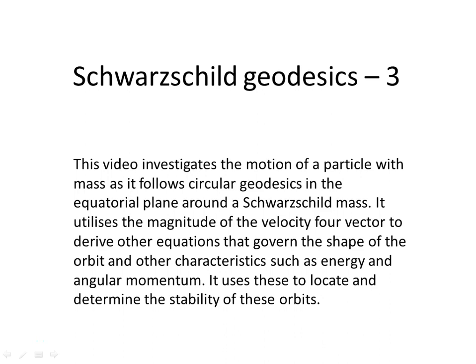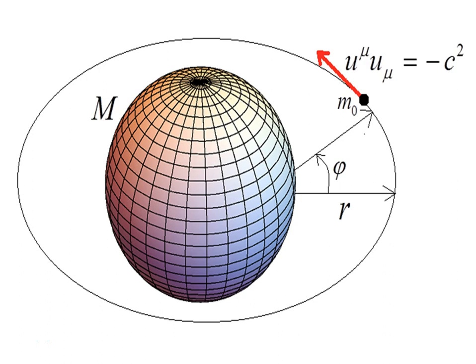This video investigates the motion of a particle with mass as it follows circular geodesics in the equatorial plane around a Schwarzschild mass. It utilizes the magnitude of the velocity 4-vector squared to derive other equations that govern the shape of the orbit and other characteristics such as energy and angular momentum, and uses these to locate and determine the stability of these orbits.